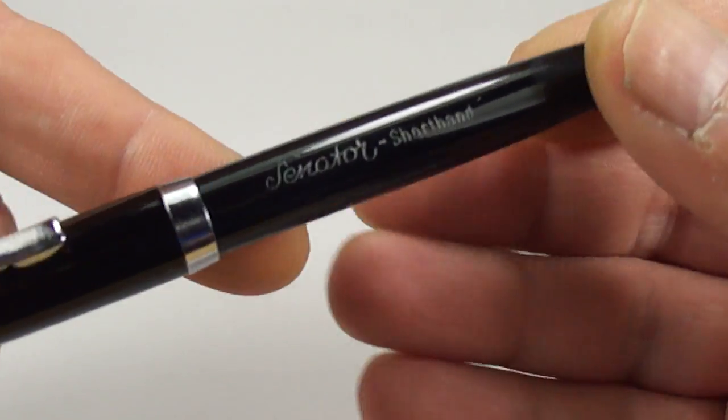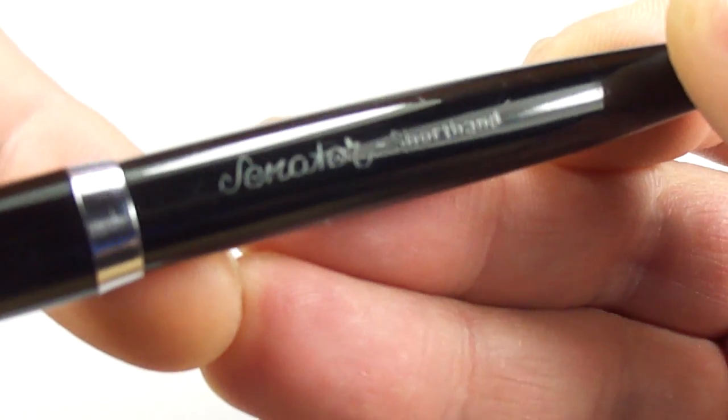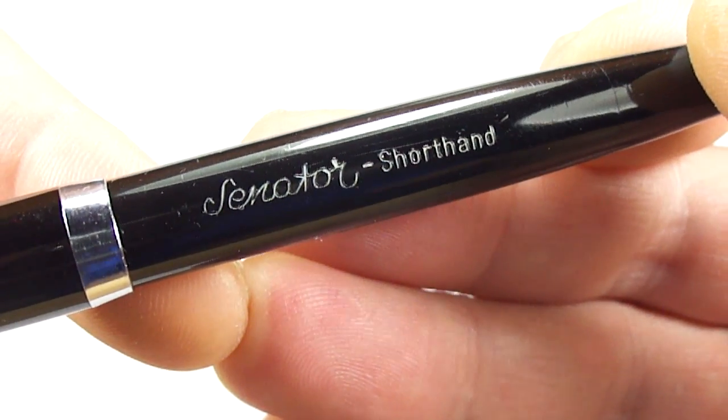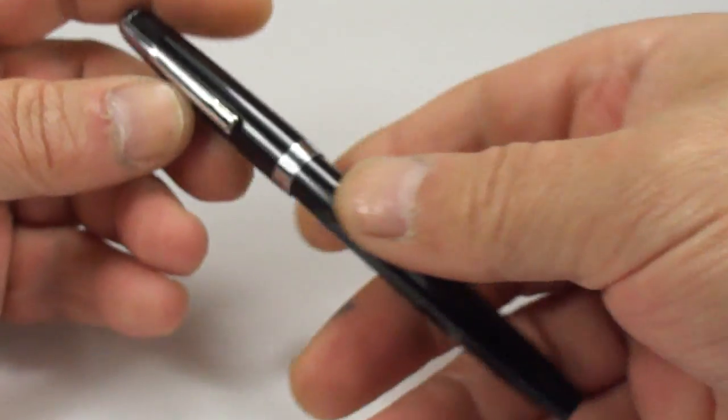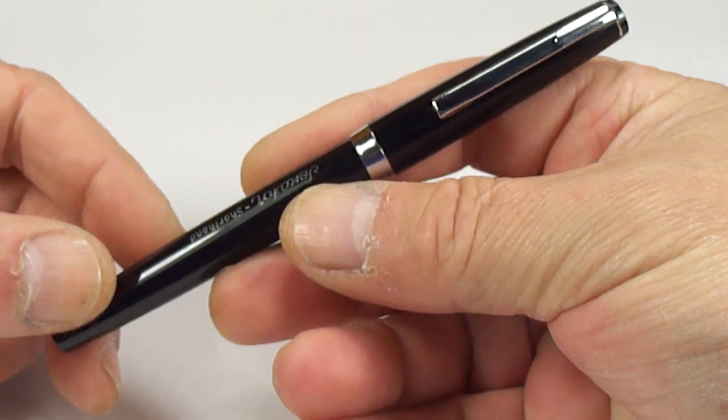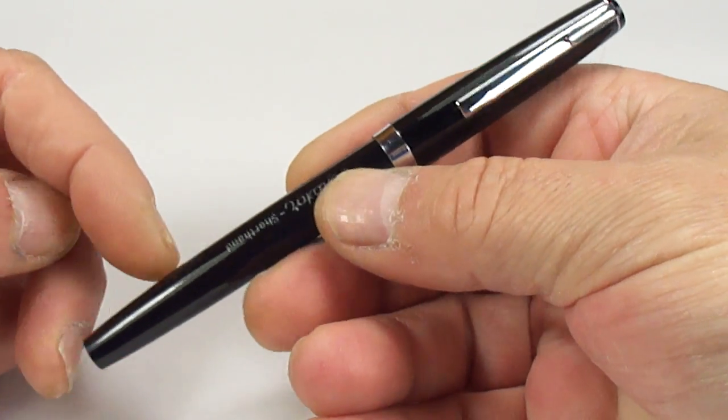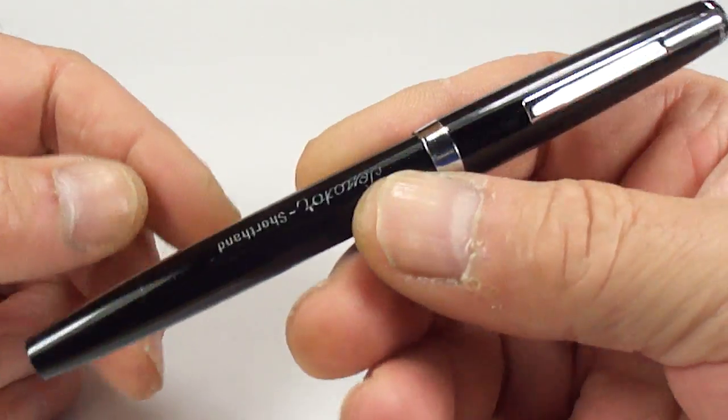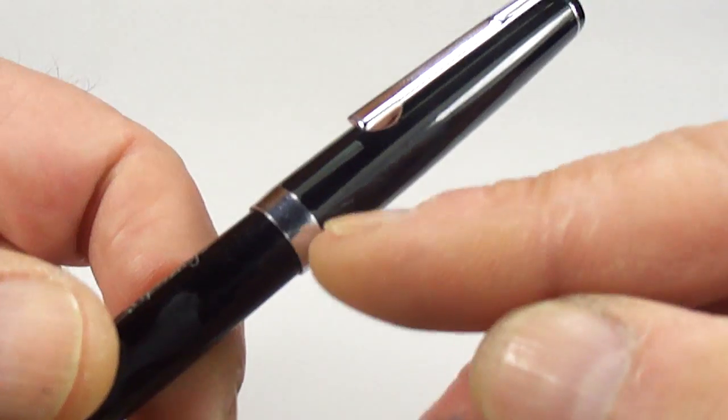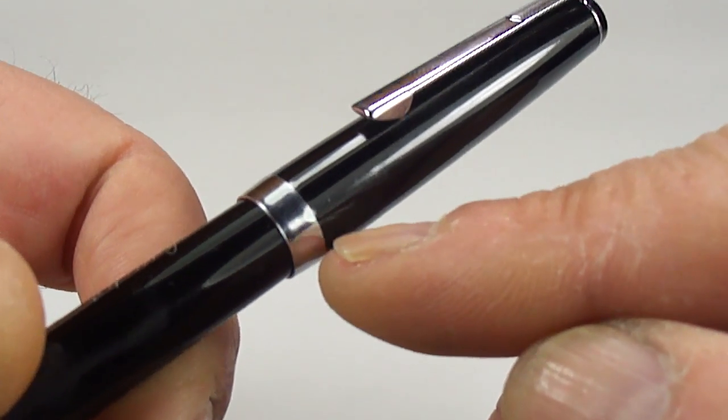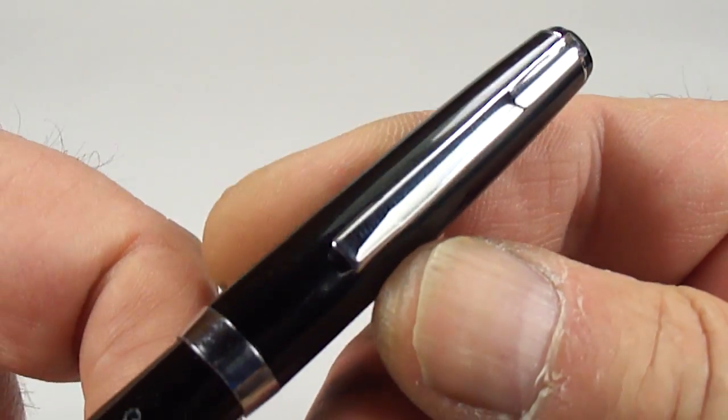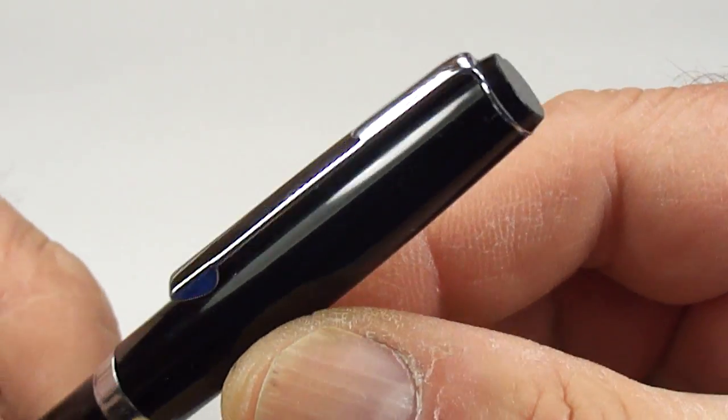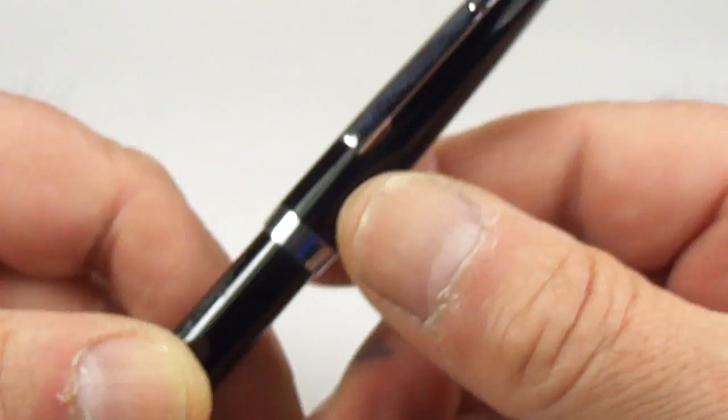Now, if I show you the imprint first of all, go straight to the imprint and there you can see it says Senator Shorthand. So what we've got here is a Senator Shorthand Fountain Pen. I believe it's from around about the 1970s. It comes in this black sort of plastic, it's got chrome trim, chrome cap band to the end and a chromed clip to the top of the cap there with a black stud to the very top.